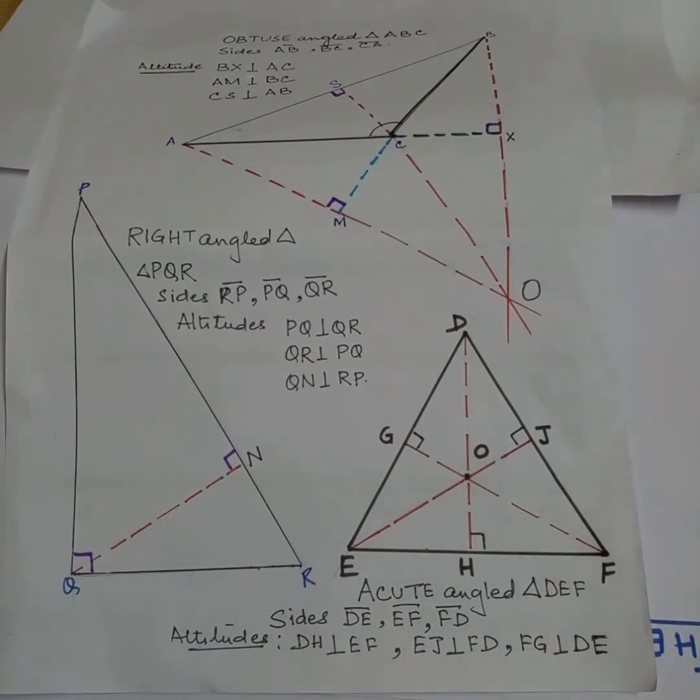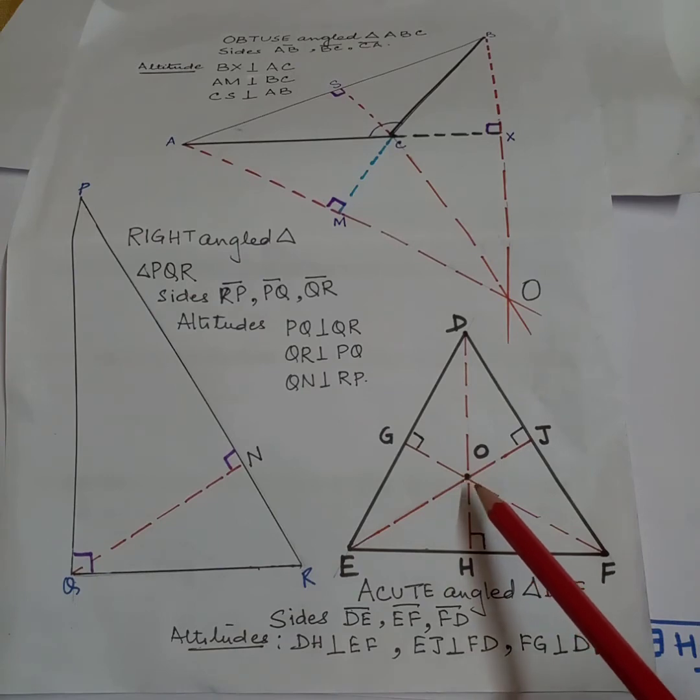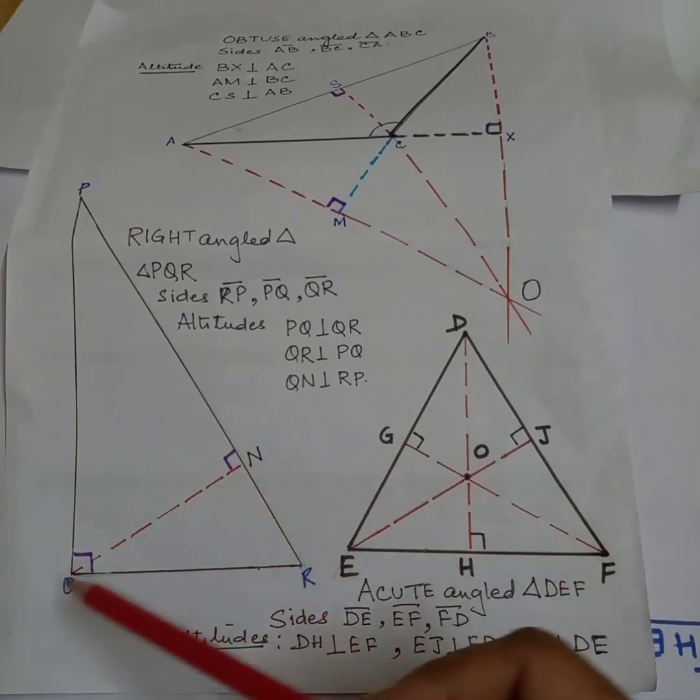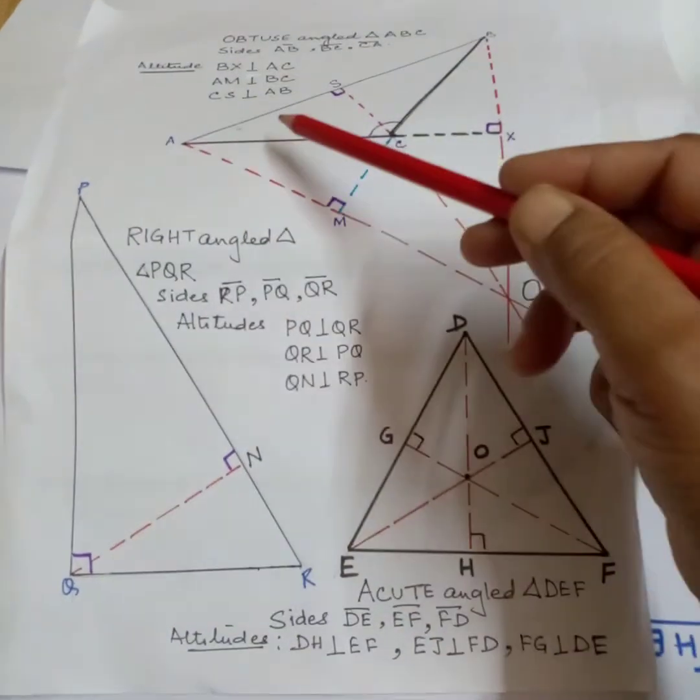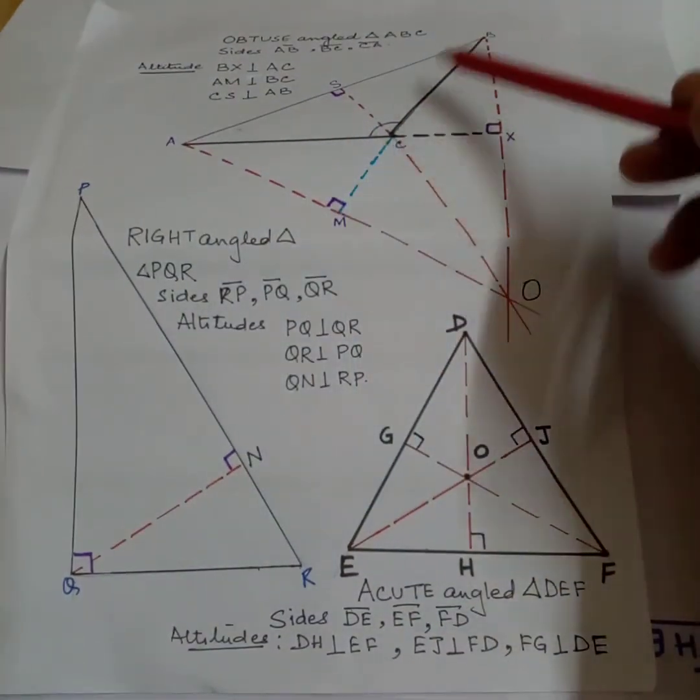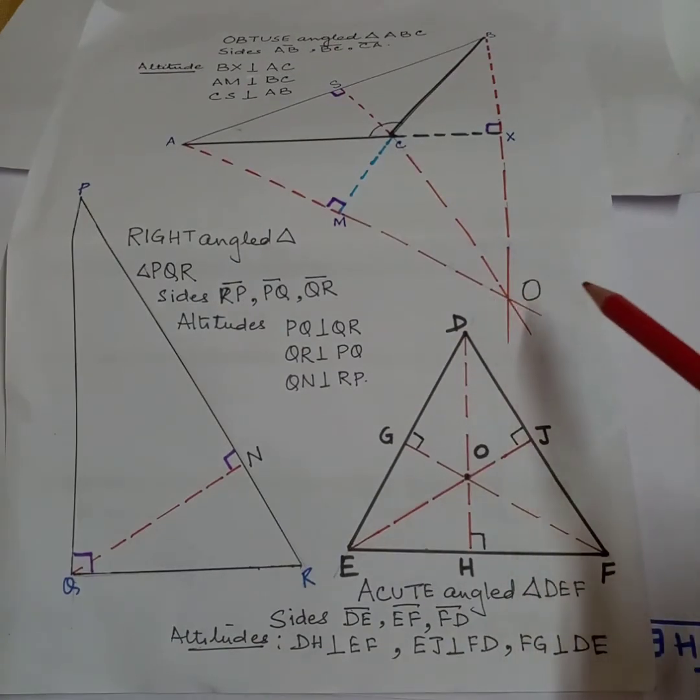The three altitudes meet at a point and the point of meeting or concurrence is called the ortho center. In acute angle triangles it's in the middle, in right angle triangles it's where the right angle is formed, and in obtuse angle triangle ABC the ortho center is outside at this O point.